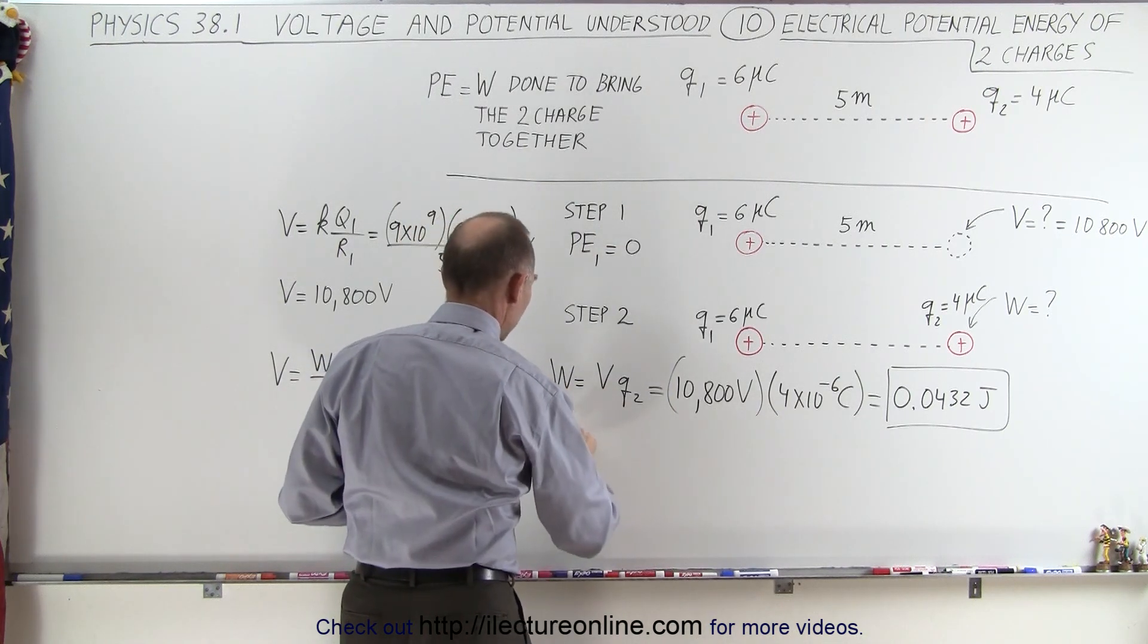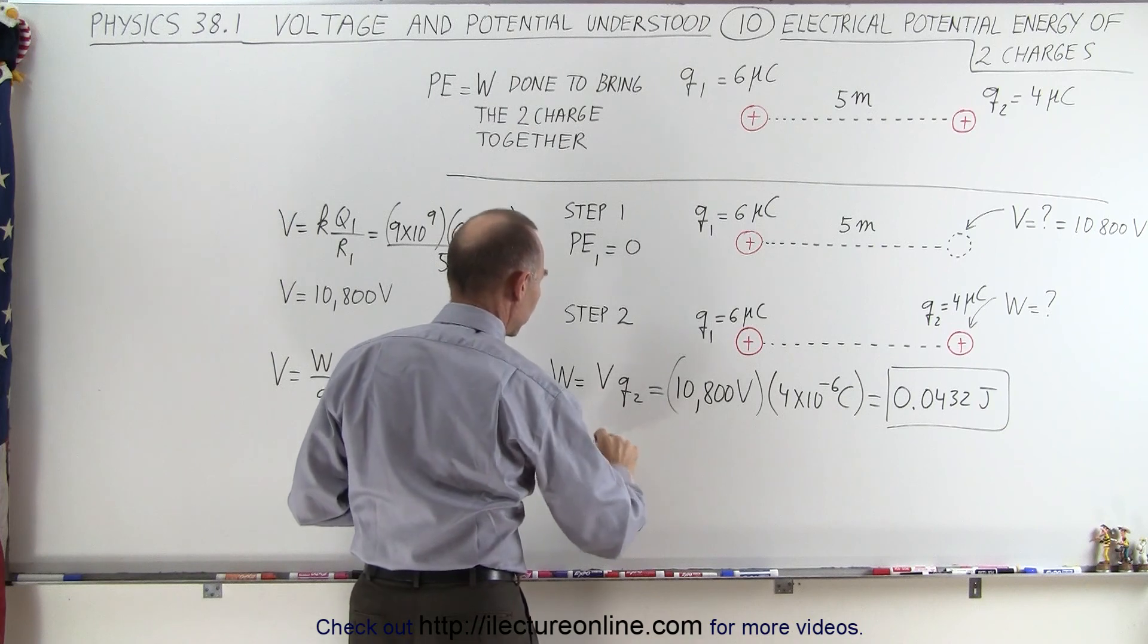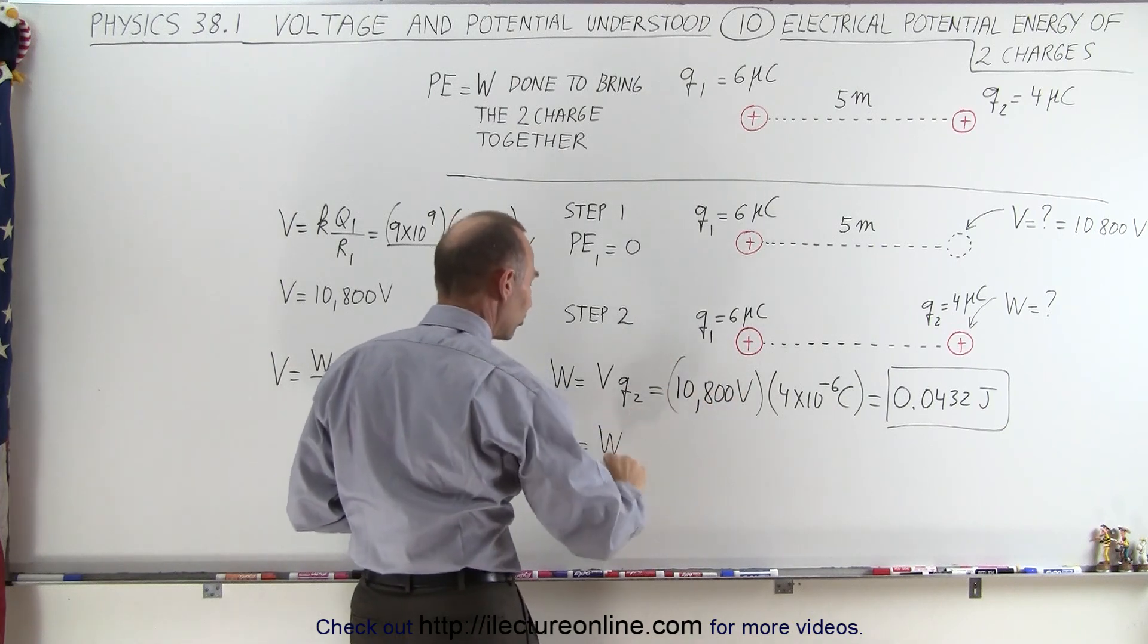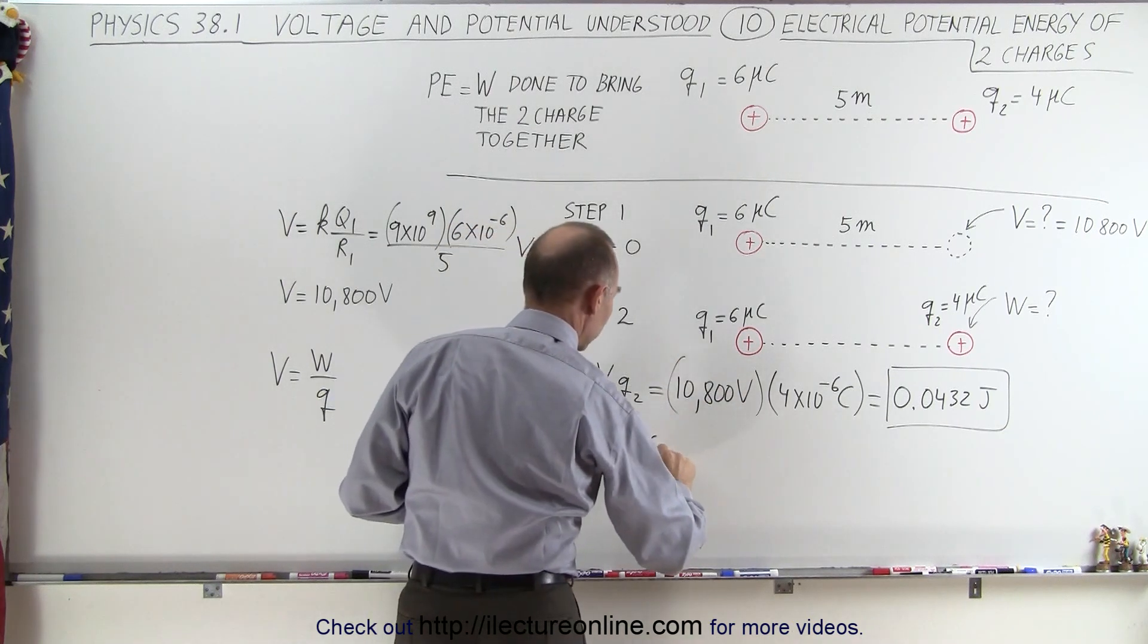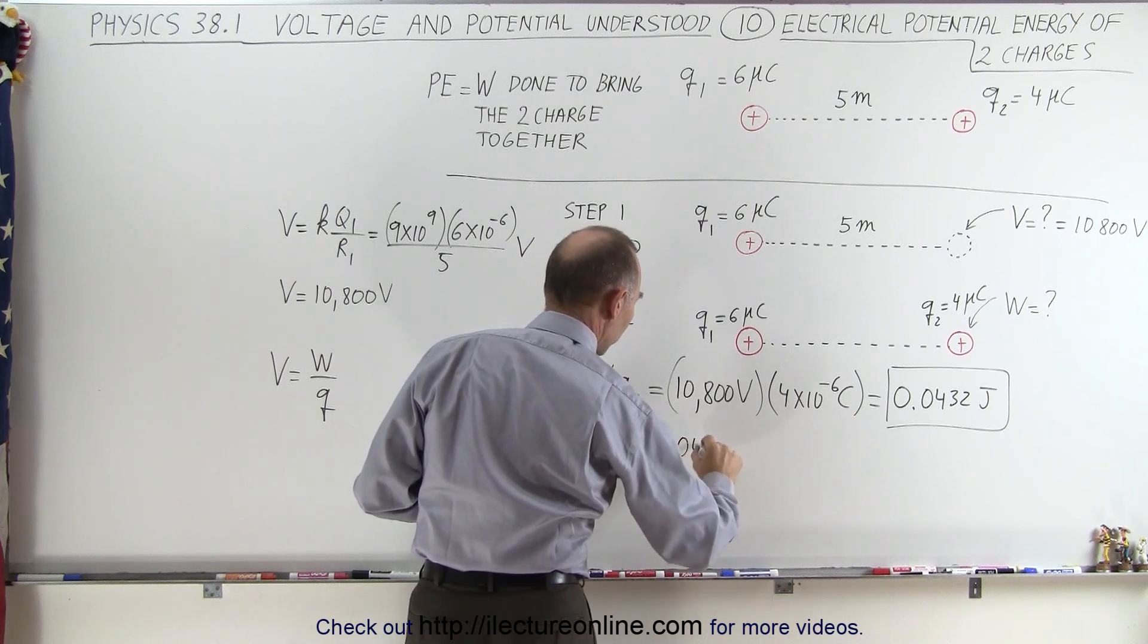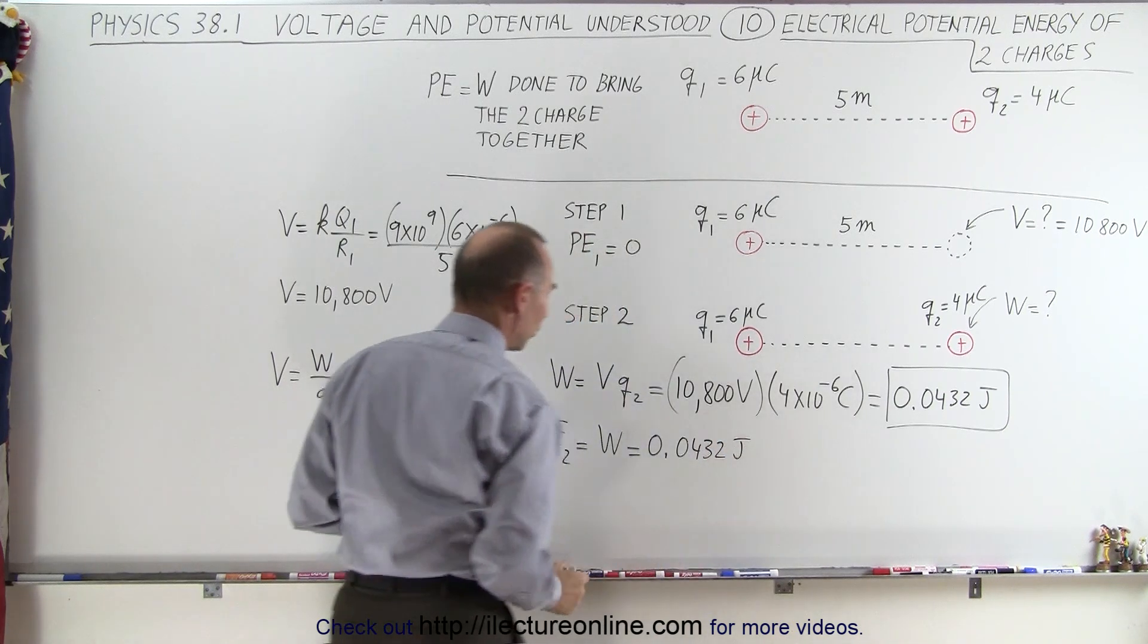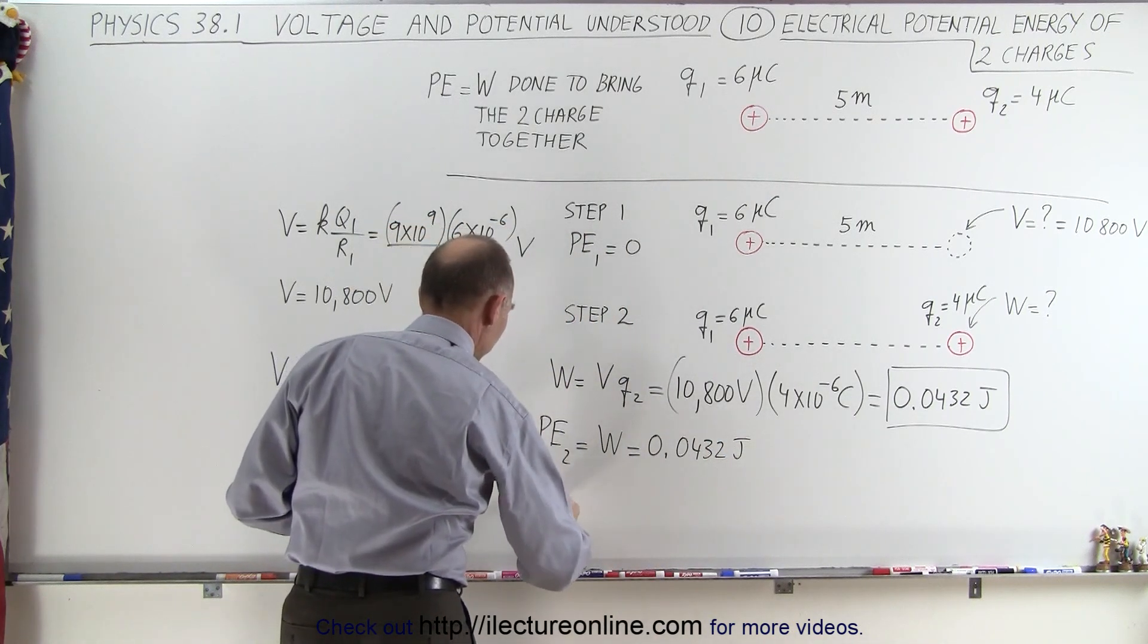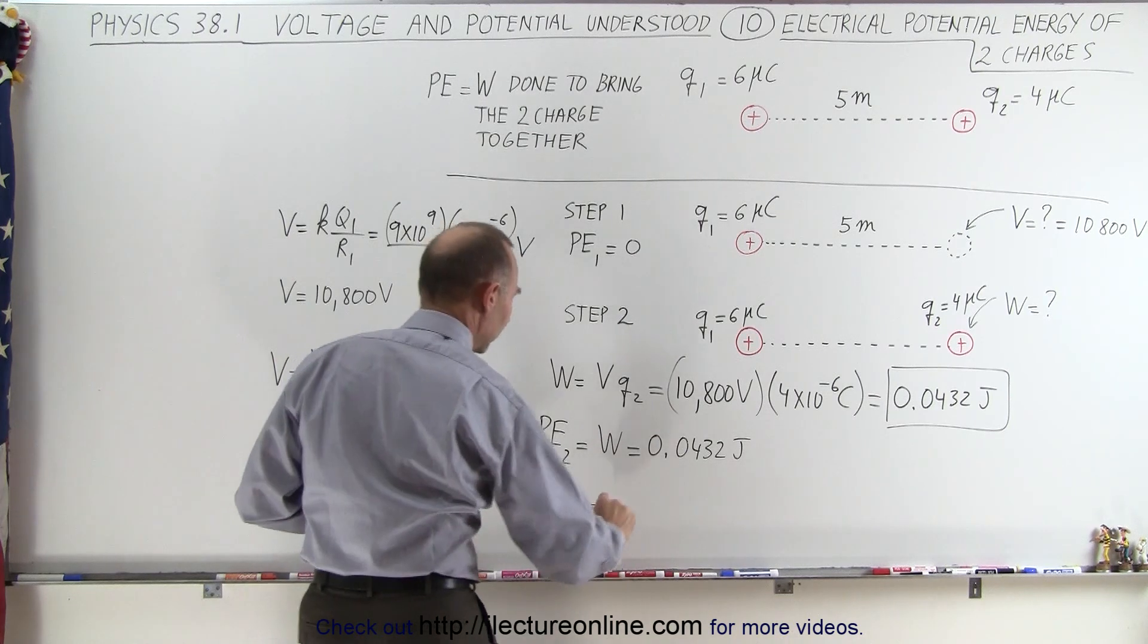Now the potential energy for step 2, that's equal to the work done to get the second charge there, which is going to be equal to 0.0432 joules.